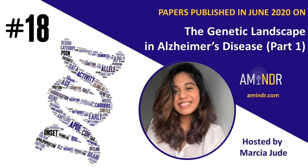The next paper is titled The Alzheimer's disease-causing presenilin-1 L435F mutation causes increased production of soluble AB43 species in patient-derived iPSC neurons closely mimicking matched patient brain tissue. It was published in the Journal of Neuropathology and Experimental Neurology, written by first author Oakley and last author Frosch. The researchers used human-induced pluripotent stem cell (iPSC)-derived neurons from an individual with familial AD linked to the PSEN1 L435F mutation, compared for biochemical phenotype with brain tissue obtained at autopsy from the same patient, to evaluate the effects of the PSEN1 L435F mutation under physiological conditions.